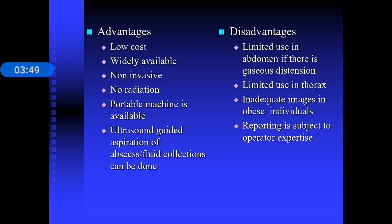The disadvantages of ultrasound include limited views when the abdomen or bowel is distended with gas. The thoracic ribcage also limits its use in the thorax. In obese individuals, increased layers of fat lead to inadequate images. The primary disadvantage is that reporting is dependent on the operator, so the expertise of the operator is very important.